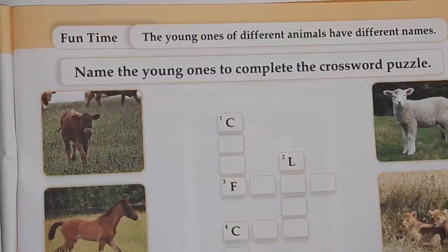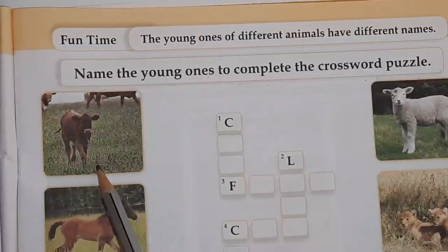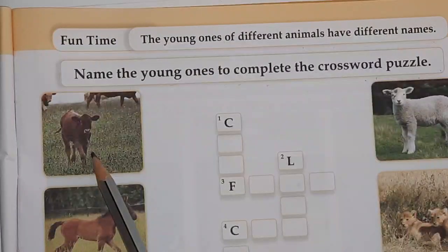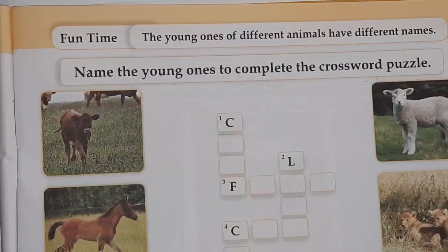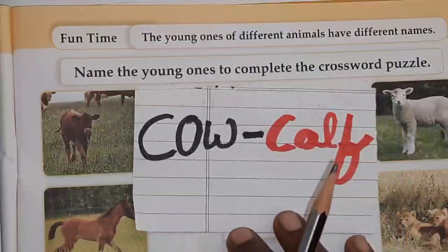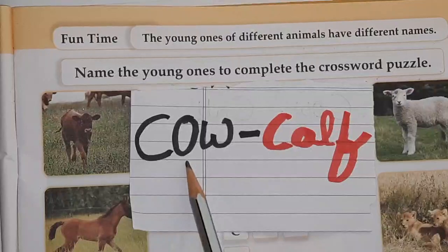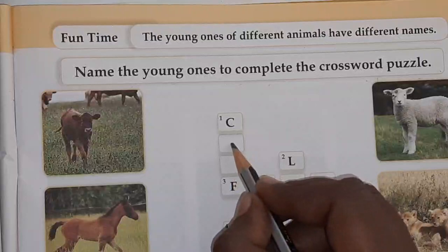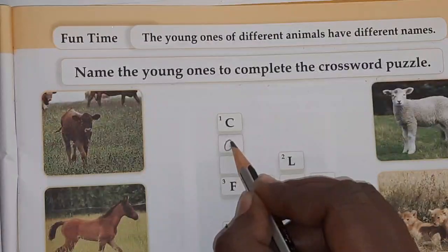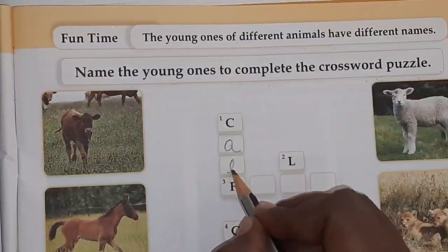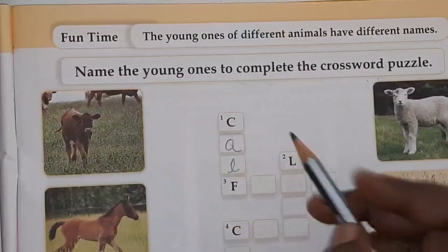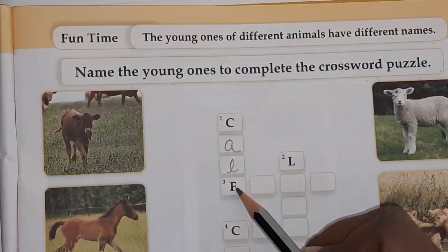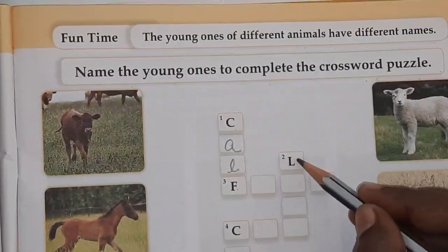So here you can see cow's young one. Young one of cow is calf. We have to write the spelling: C-A-L-F. Calf.